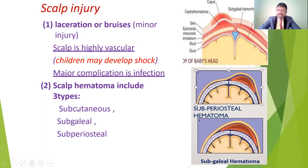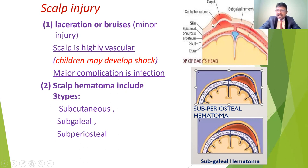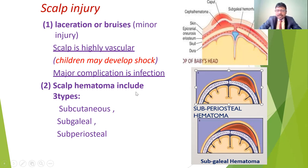Coming to the hematomas: subcutaneous hematoma means bleeding below the skin. Subgaleal hematoma is bleeding below the epicranial level. Subperiosteal hematoma is bleeding below the periosteum, below the skull. These are the three types of head injuries you can find because of scalp injuries.